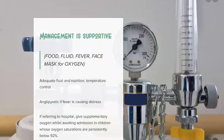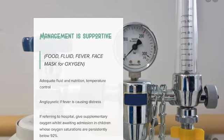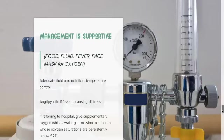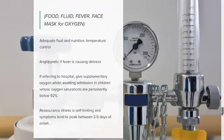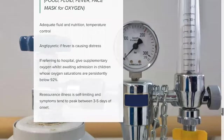How do we manage bronchiolitis? Think of it as four F's: food, fluid, fever, and face mask for oxygen. You want to make sure the child is having adequate fluid and nutrition, and that the temperature is well controlled. If the child's fever is causing significant distress, we can give acetaminophen. If referring the child to hospital, that is when you give oxygen — especially when the oxygen saturation is below 92%. Make sure they are going with oxygen. You can also reassure the parents that this illness typically lasts one to two weeks, with the peak between three to five days of onset.